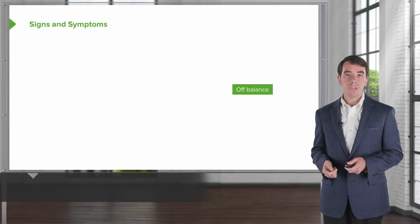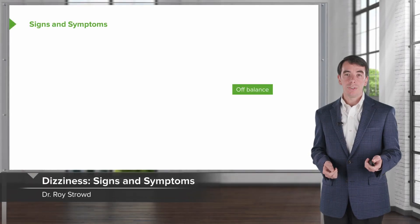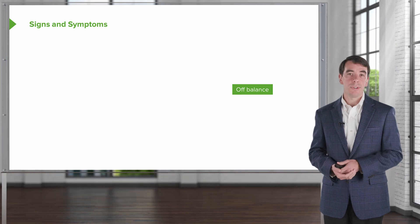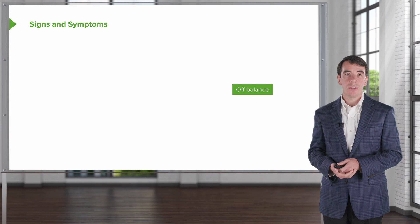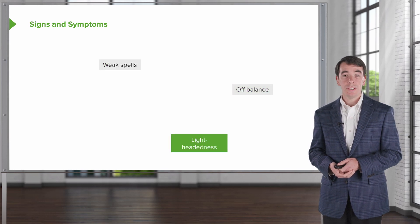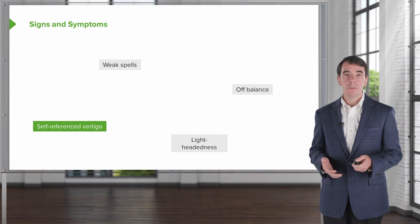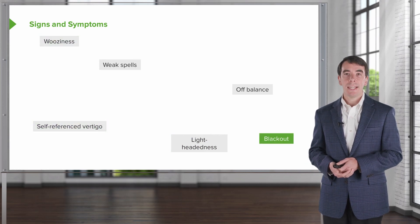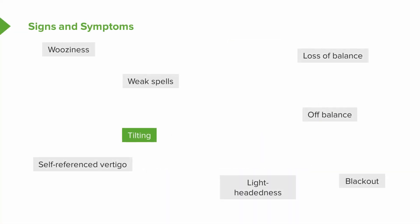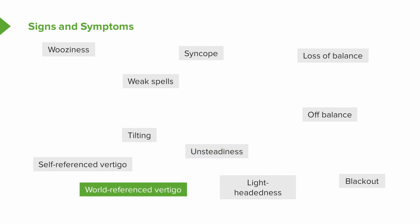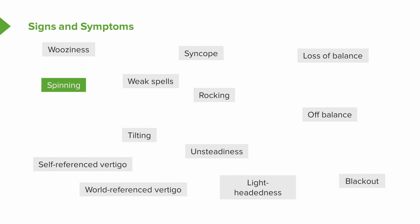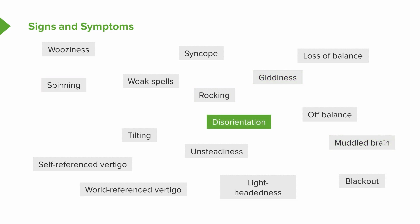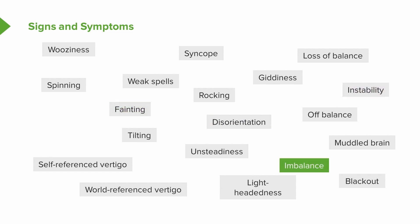Let's talk through our approach to dizziness. One of the challenges is that patients describe dizziness very differently. Some people will say they're off balance; others have weak spells. Lightheadedness is a common description, as are self-referenced vertigo, wooziness, blacking out episodes, loss of balance, tilting, syncope, presyncope, unsteadiness, world-referenced vertigo, spinning about the world, rocking, spinning, muddled brain, giddiness, disorientation, fainting, instability, imbalance, and swaying — many descriptions we can hear from patients who are suffering from dizziness.